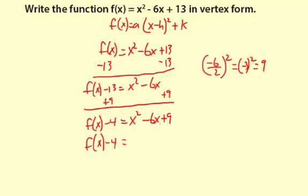Now we use our special factoring pattern. f(x) - 4 = (x - 3)². This is our perfect square.